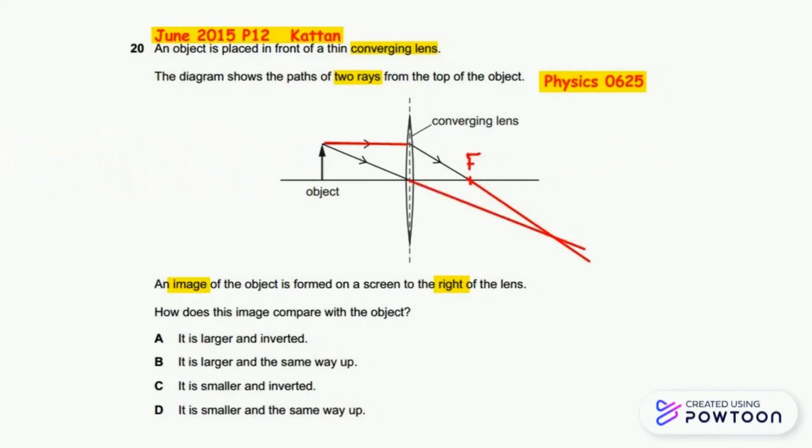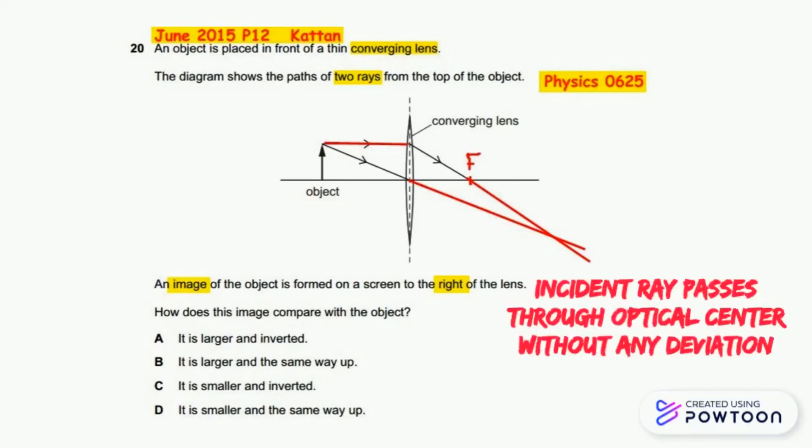The second light ray from the same position passes through the center of the converging lens. This light ray continues without any refraction. The center of the converging lens is the optical center, and the ray passes through without any deviation.